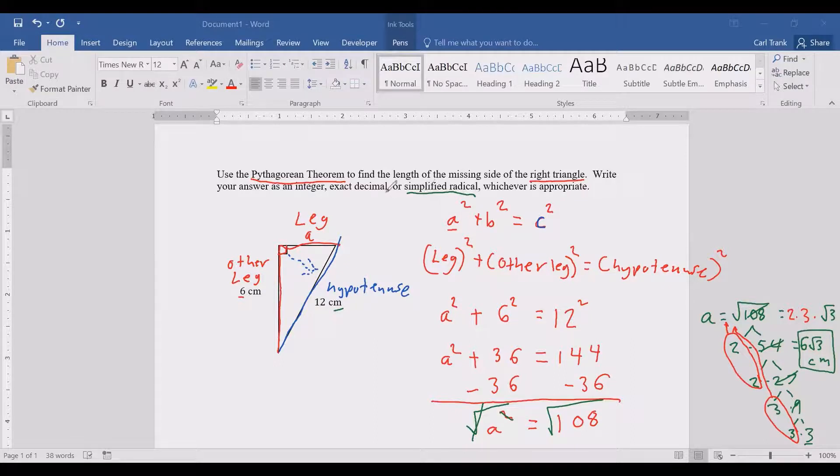For this question because it asked for an integer, exact decimal, or simplified radical we have to leave our answer as a simplified radical because if you got a decimal from this it would not be exact. It would be a decimal that goes on forever. You don't want to spend the rest of your life writing a decimal for one math problem. If the question wanted a decimal you would just type 6 square root of 3 into your calculator to get a decimal and round it to however the problem asked.